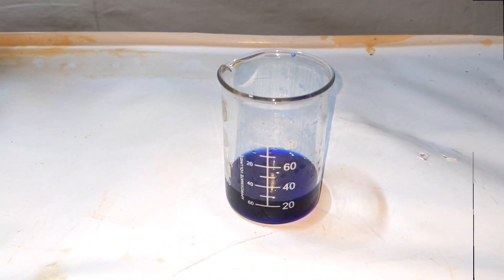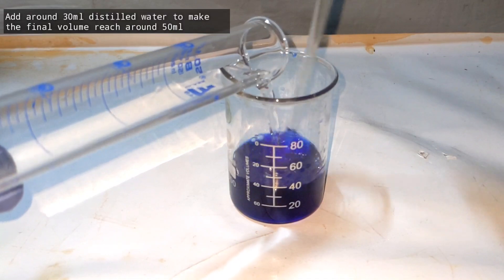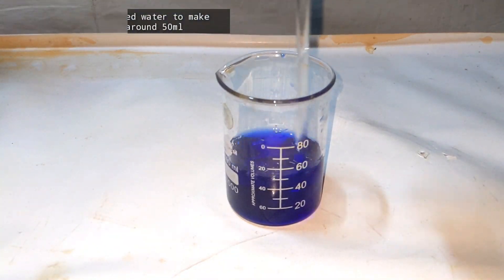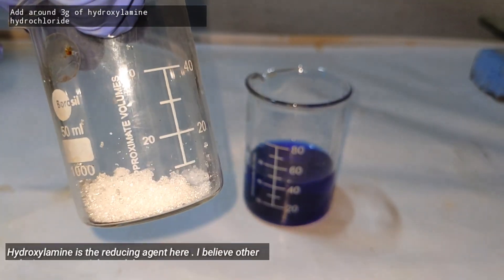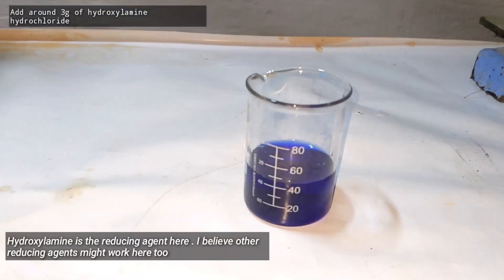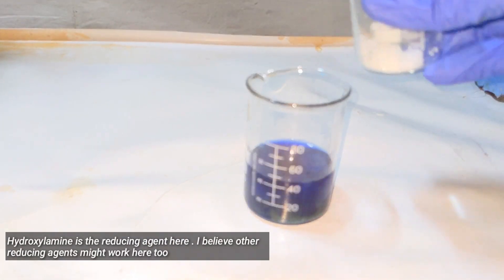Once the 5 milliliters of ammonia is added, we are left with this deep blue colored complex solution, and we add some distilled water just enough to make the total volume to around 50 milliliters. Now take 3 grams of hydroxylamine hydrochloride in a separate beaker and add it to the tetra amine copper 2 complex.